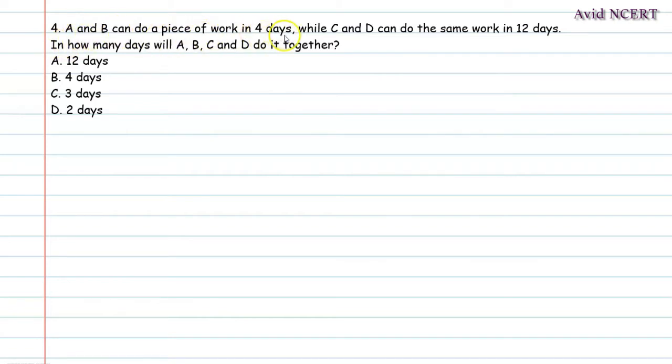A and B can do a piece of work in four days while C and D can do the same work in 12 days. So in how many days will A, B, C and D do it together?